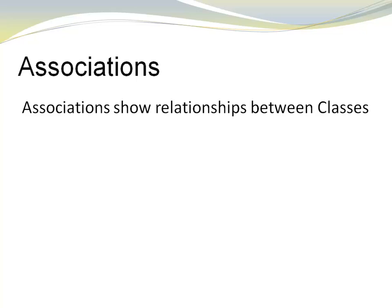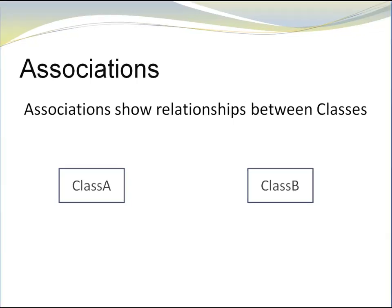Associations show relationships between classes. Here, we have two classes, class A and class B. We are going to look at unary associations and also at binary associations. Let's start with unary associations.